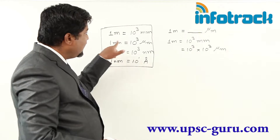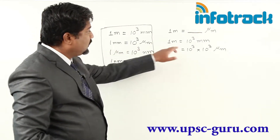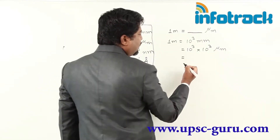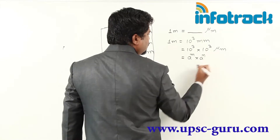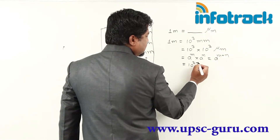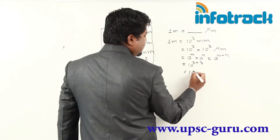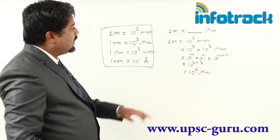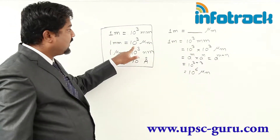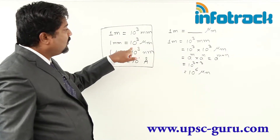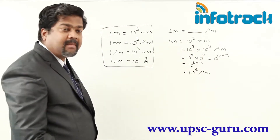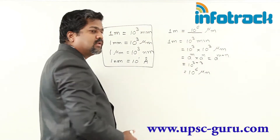Keep in mind: 1 millimeter equals 10 raised to 3 micrometers. Therefore if there are 10 raised to 3 millimeters, then 10 raised to 3 millimeters must be multiplied by 10 raised to 3 to get the answer in micrometers. Applying the law of indices — a raised to m into a raised to n equals a raised to m plus n — we get 10 raised to 3 plus 3, so the answer is 10 raised to 6 micrometers.